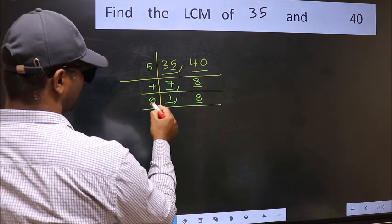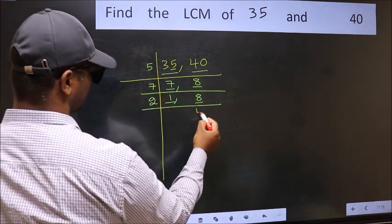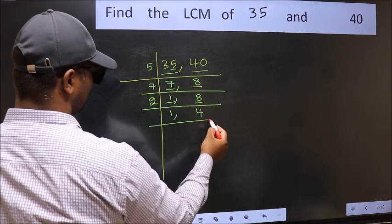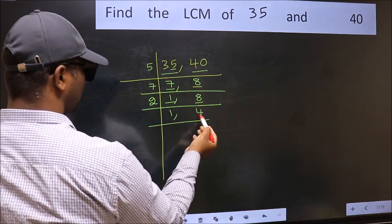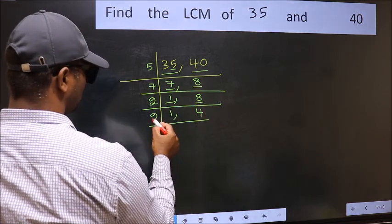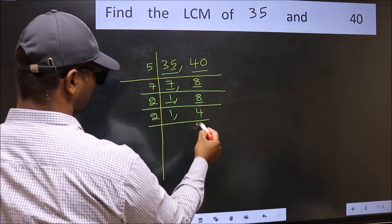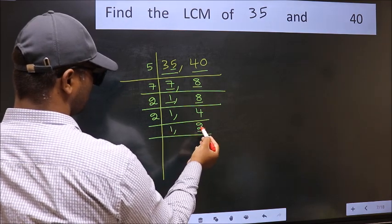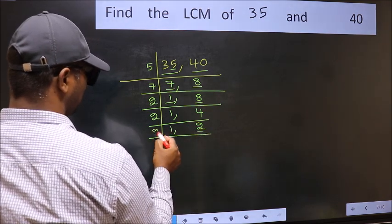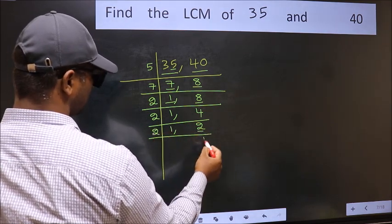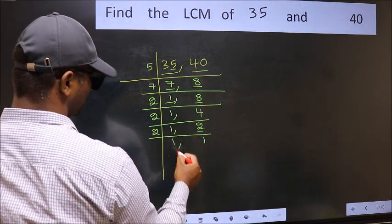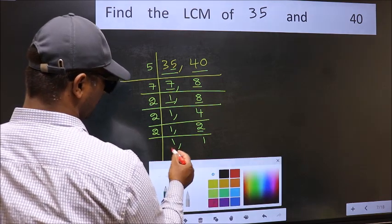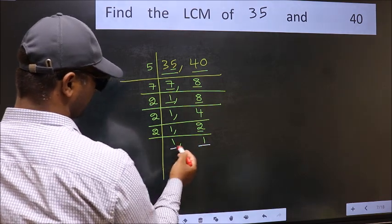8 is 2 fours, so 2 times 4 equals 8. Now here we have 4. 4 is 2 twos, so 2 times 2 equals 4. Now here we have 2. 2 is a prime number, so 2 ones are 2. We got 1 in both places.